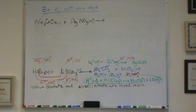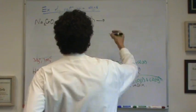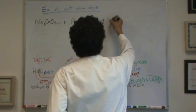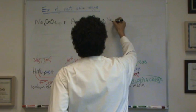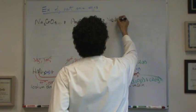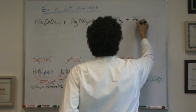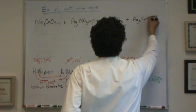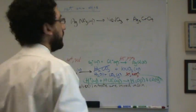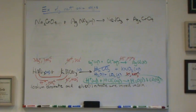Anyways, let's write the products. This is a double replacement because I've got two ionics. So we've got NaNO3 plus Ag2CrO4. So I've got that.